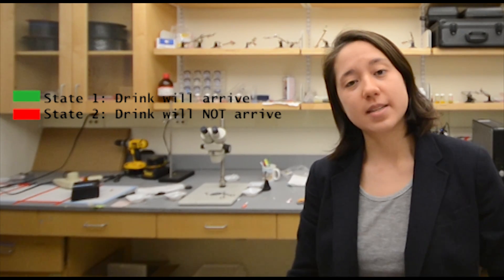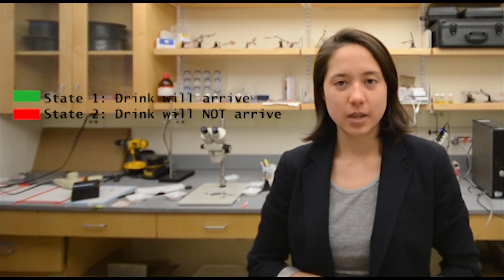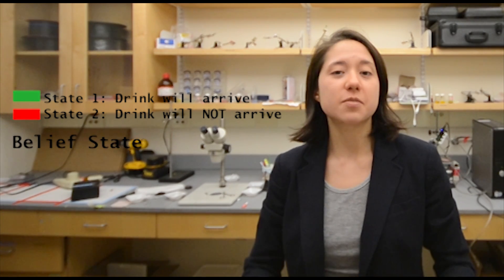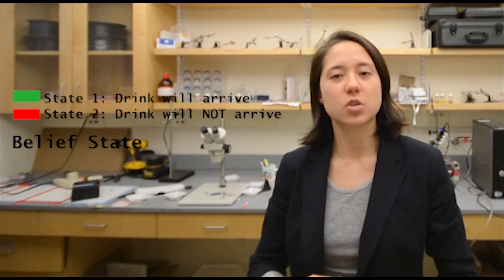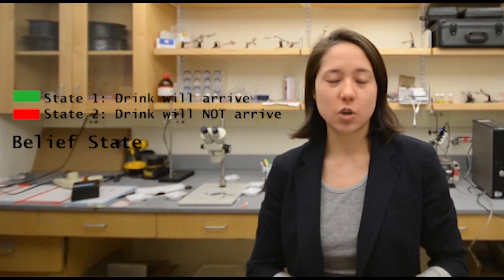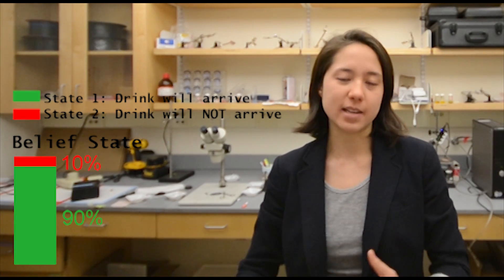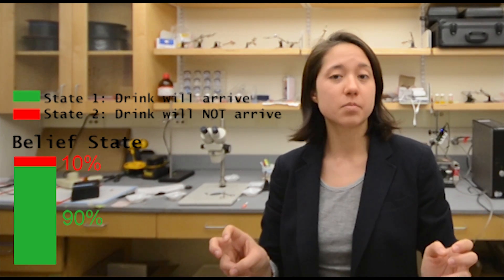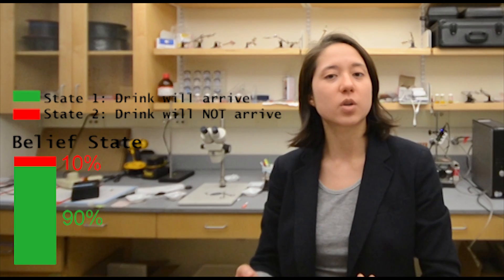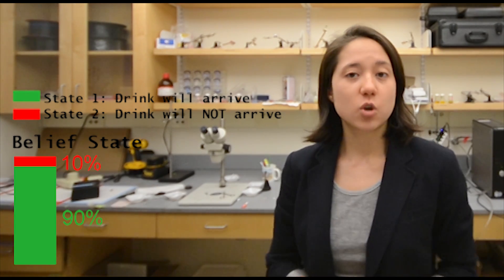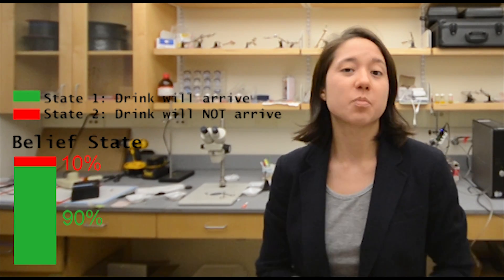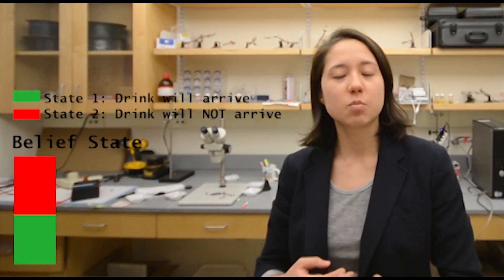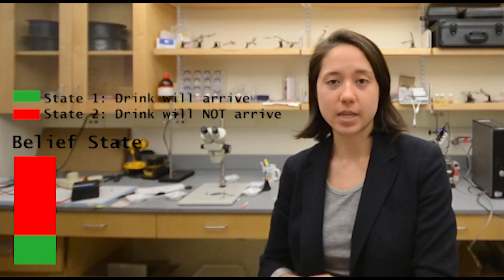Instead, because the states are hidden, they have to be inferred. Hidden state inference can be mathematically described using a belief state, which is a probability distribution across states. So when you first put in your order, your belief state could be 90-10, allotting 90% probability to the my drink will come state, and 10% to the my drink will not come state. And say after you wait for 10 minutes with no sign of the bartender, your belief state could become more and more pessimistic, allotting more and more probability to the my drink will not come state.